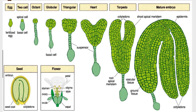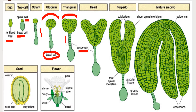Let me explain how exactly embryo formation takes place in a dicot. After the fertilized egg divides, the upper portion is called the apical cell and the lower portion is called the basal cell. The basal cells form 10 to 12 cells called the suspensor. It then passes through globular, triangular, heart-shaped, and torpedo-shaped stages, finally giving rise to the mature embryo.